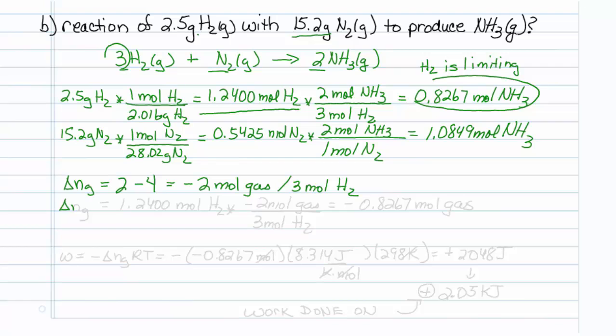Delta NG for our specific amounts is based on 1.2400 moles of hydrogen. There is minus 2 moles of gas for every 3 moles of hydrogen. So multiplying that out gives us minus 0.8267 moles of gas.